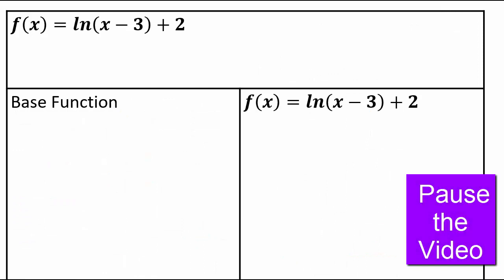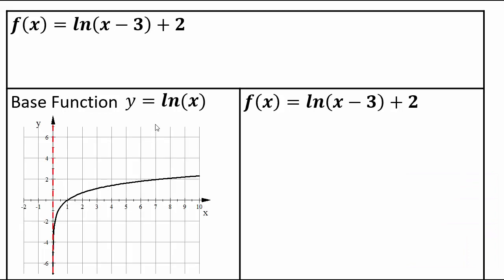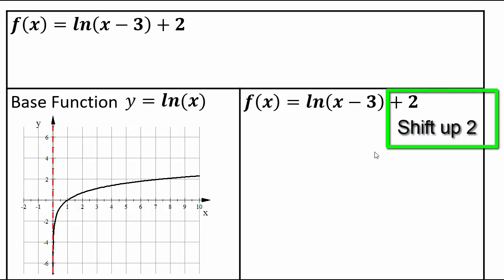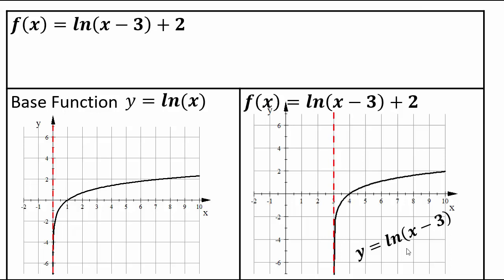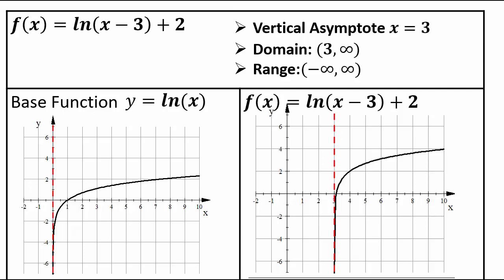For y equals natural log(x minus 3) plus 2: the base function is y equals natural log x, the inverse of e to the x. We shift right 3 for x minus 3, then up 2 for the plus 2 on the outside. The vertical asymptote becomes x equals 3. Domain is (3, ∞) and range is (-∞, ∞).